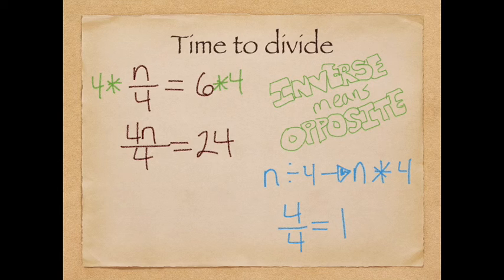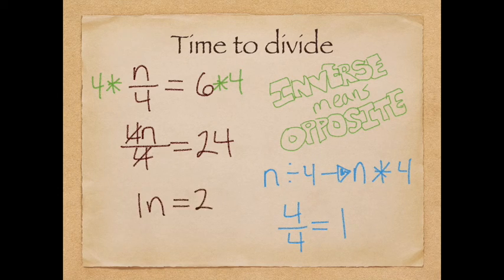Well, four fourths is the same thing as one. Those two cancel each other out, leaving me with one n equals 24, because I forgot at the beginning there, when I did six times four, that that is 24. Doing that to both sides means I'm going to multiply on both sides, and I get 24.